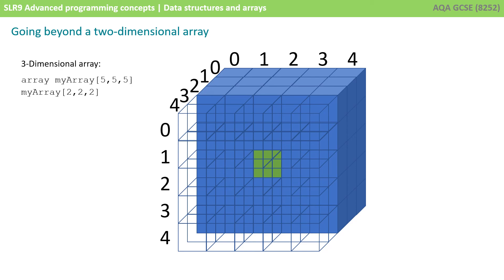So, here we're accessing 2, 2, 2. We're going down two, across two, and two rows deep into our cube.